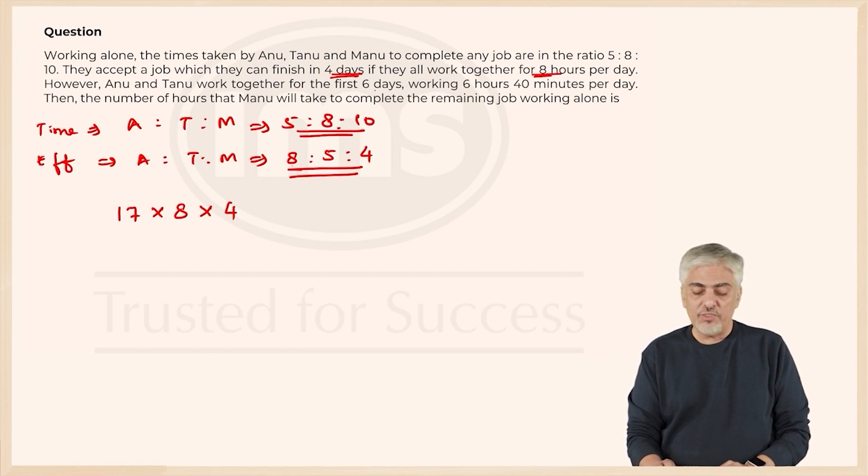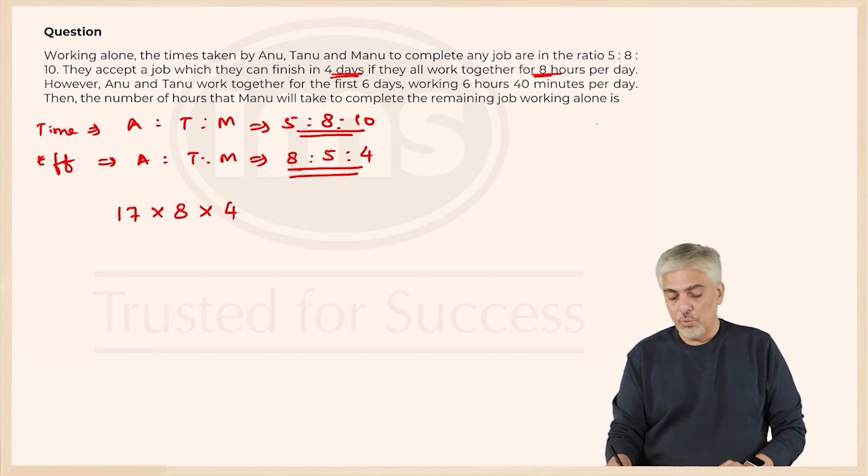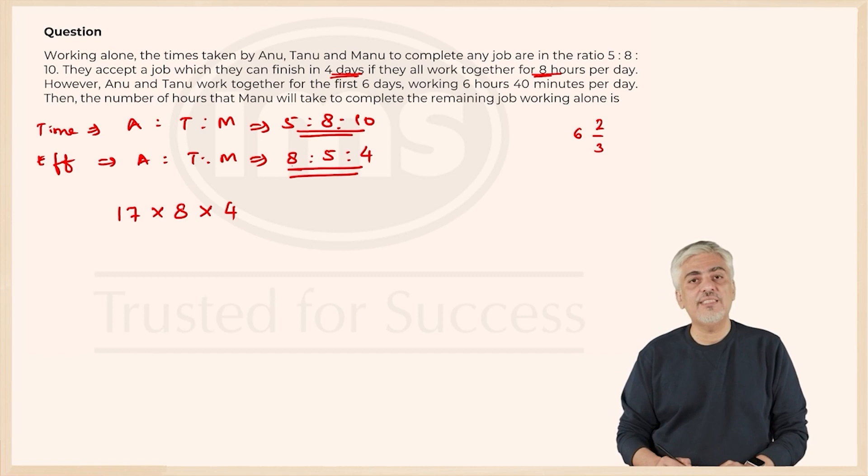However, A and T work together for the first 6 days working 6 hours 40 minutes. What is 40 minutes? It is 2 thirds of an hour. So 6 hours 40 minutes is 6 and 2 thirds, which is 20 upon 3 hours. So initially only A and T are working. A and T means 8 plus 5 is 13. 13 into 20 upon 3 into 6 days. So much work they have already finished.